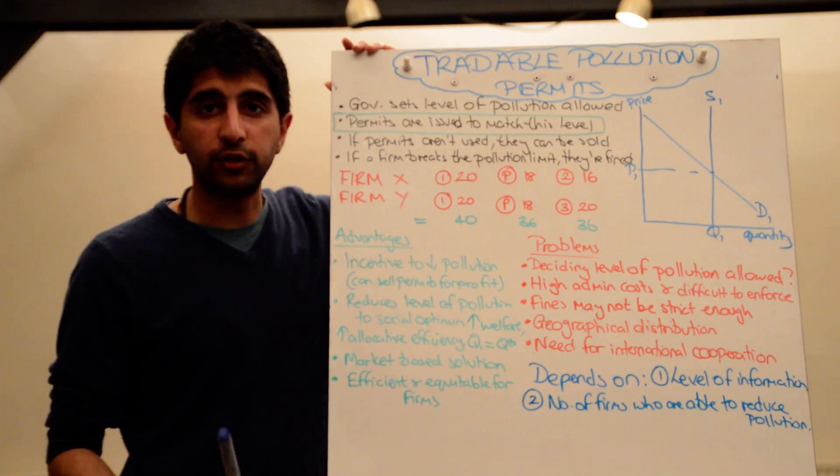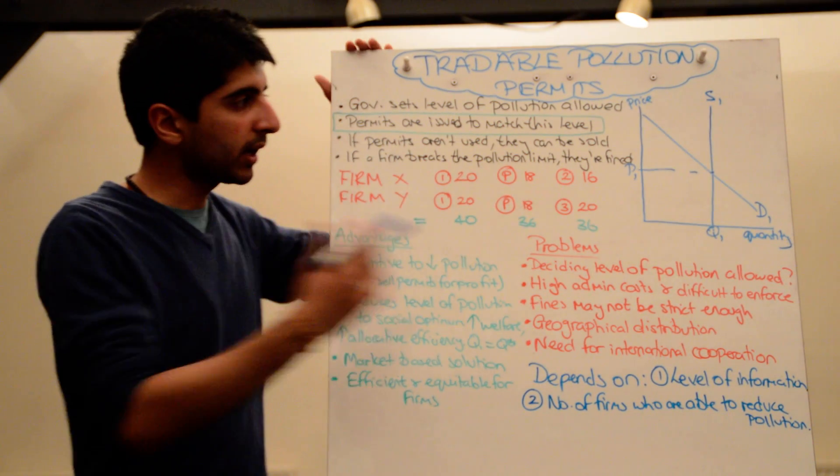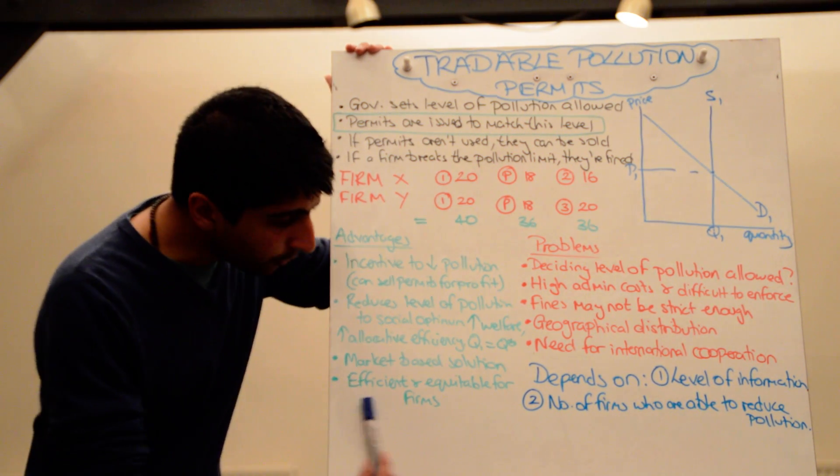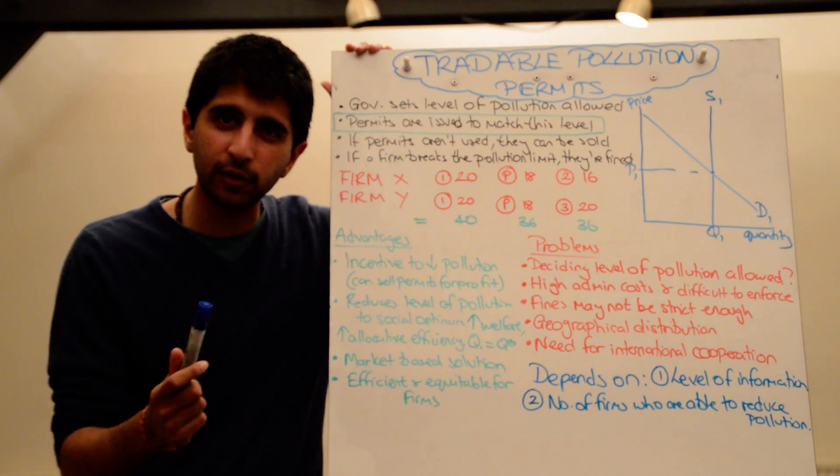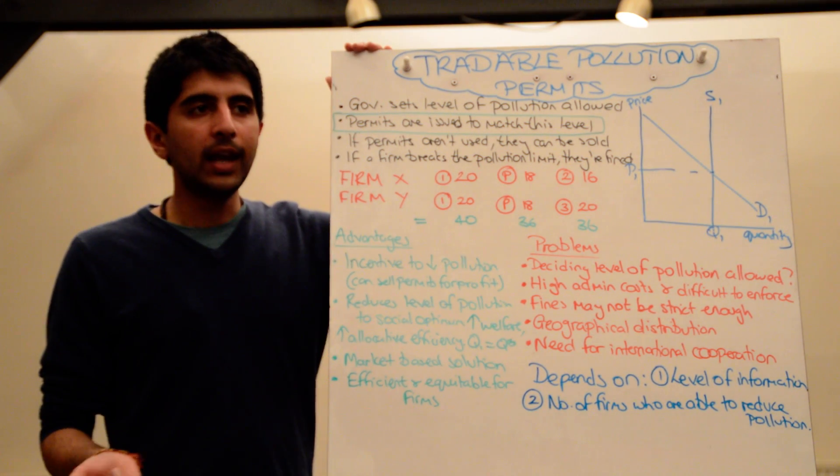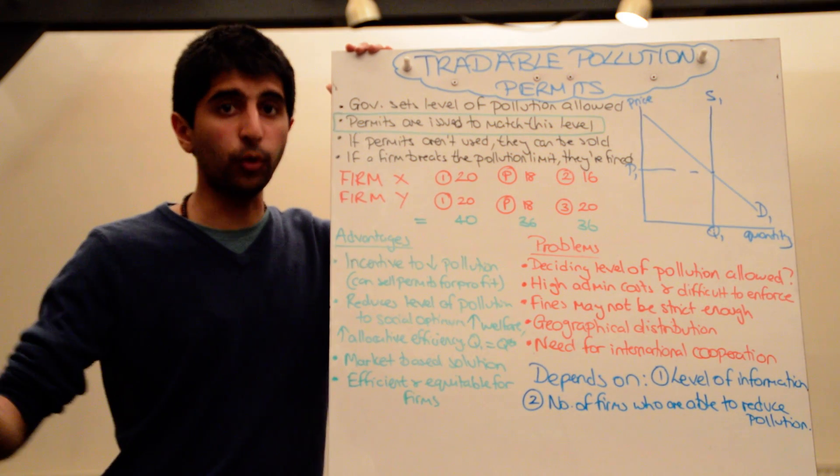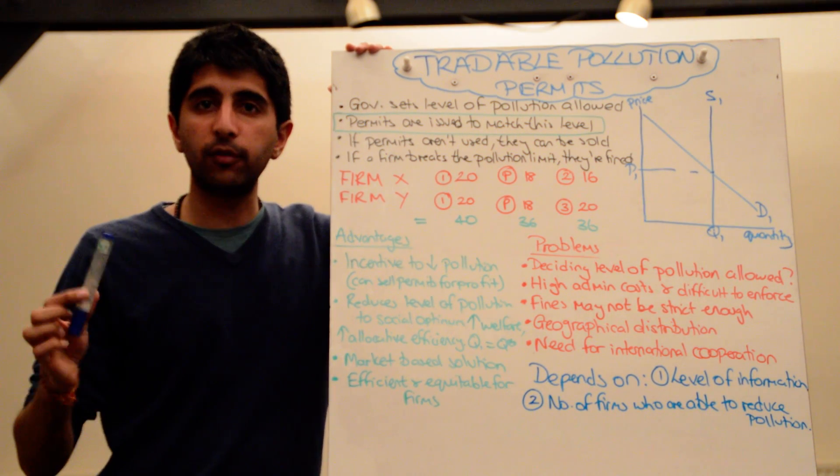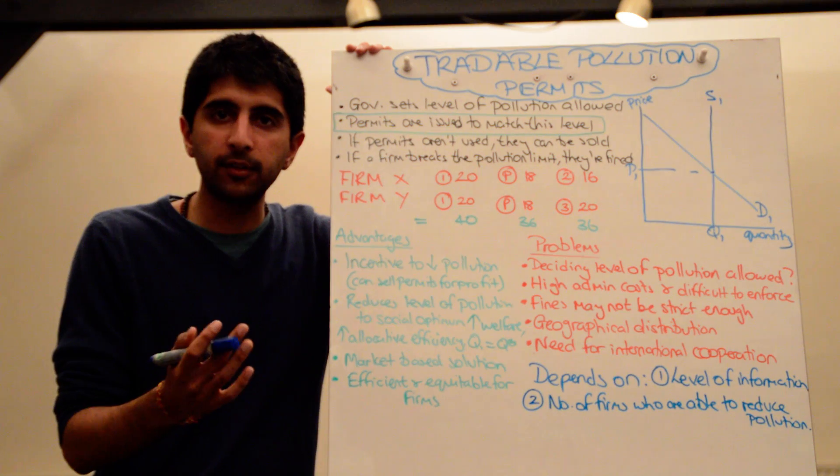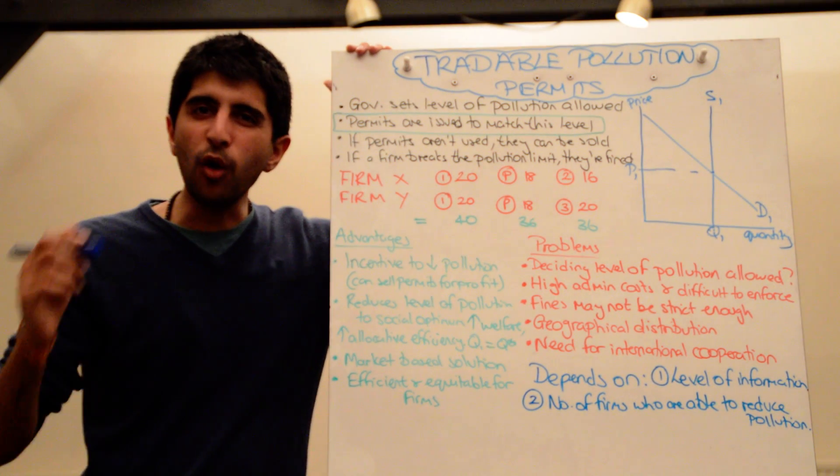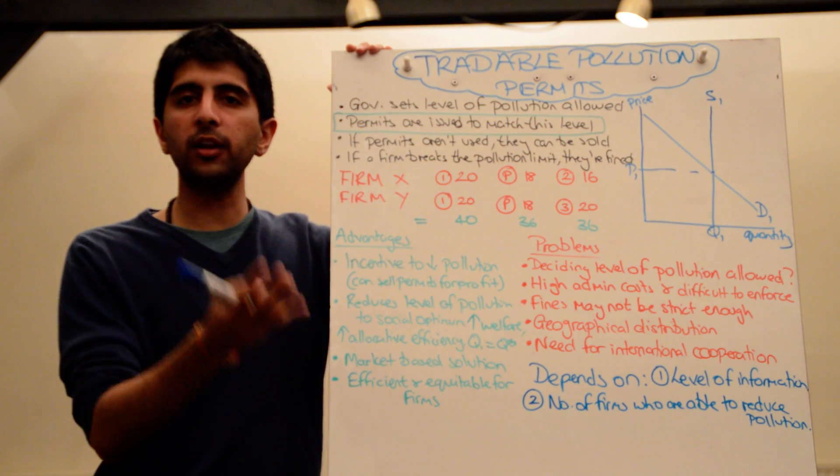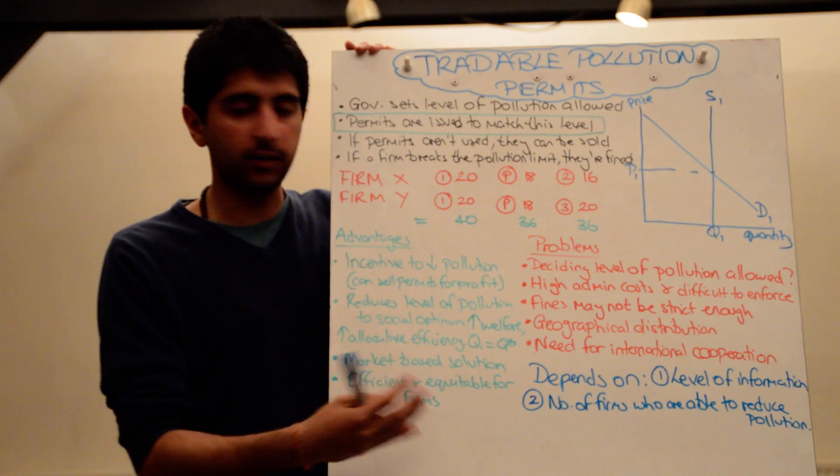It's a market-based solution. It doesn't involve too much government meddling. The market for permits allows to work, and that can deal with efficiently allocating permits and solving the market failure. And most importantly, you could say down below, it's an efficient and equitable solution for firms. Efficient because it can kind of solve the market failure, but equitable because it doesn't actually hinder firms too much. Firms have got choices still. Yes, they can decide to reduce their level of pollution, they can invest in technology, but if they can't, if it's too expensive, they have another option of buying permits. So firms are never going to be overly disadvantaged. There are always going to be options for firms to best deal with such a policy like this. The cost of production won't skyrocket, and they won't be overly disadvantaged. That's a huge benefit.